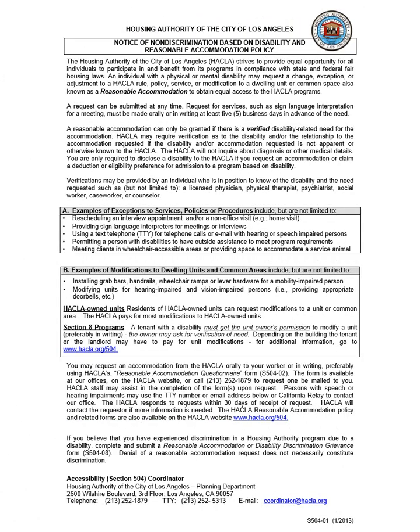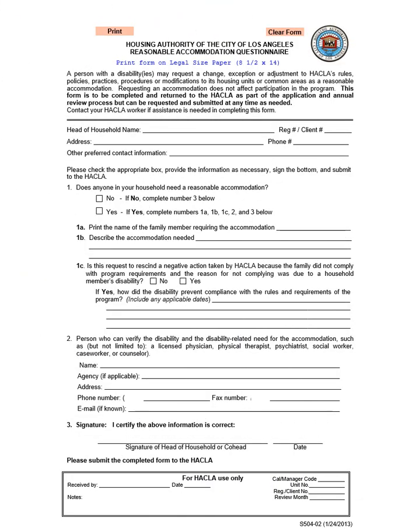HACLA strives to provide equal opportunity for all individuals to participate in and benefit from its programs in compliance with state and federal fair housing laws. An individual with a physical or mental disability may request a change, exception, or adjustment to a HACLA rule, policy, service, or modification to a dwelling, unit, or common space — also known as a reasonable accommodation — to obtain equal access to HACLA programs. This form is to be completed and returned to HACLA as part of the application and annual review process, but can be requested and submitted at any time as needed. Please be sure that the head of household signs and dates the bottom of the form.